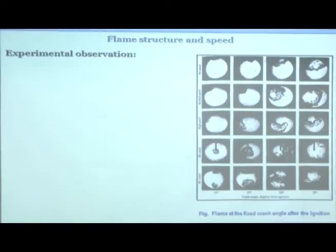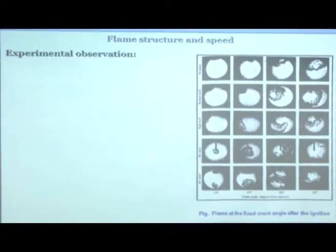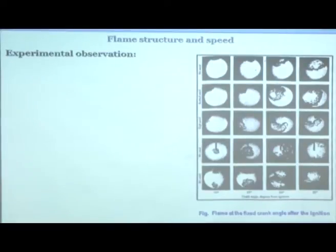With high swirl, at 10, 15, 20, and 30 degrees the unburnt charge remaining is significantly less. You can see how the unburnt charge location changes depending on the swirl conditions.